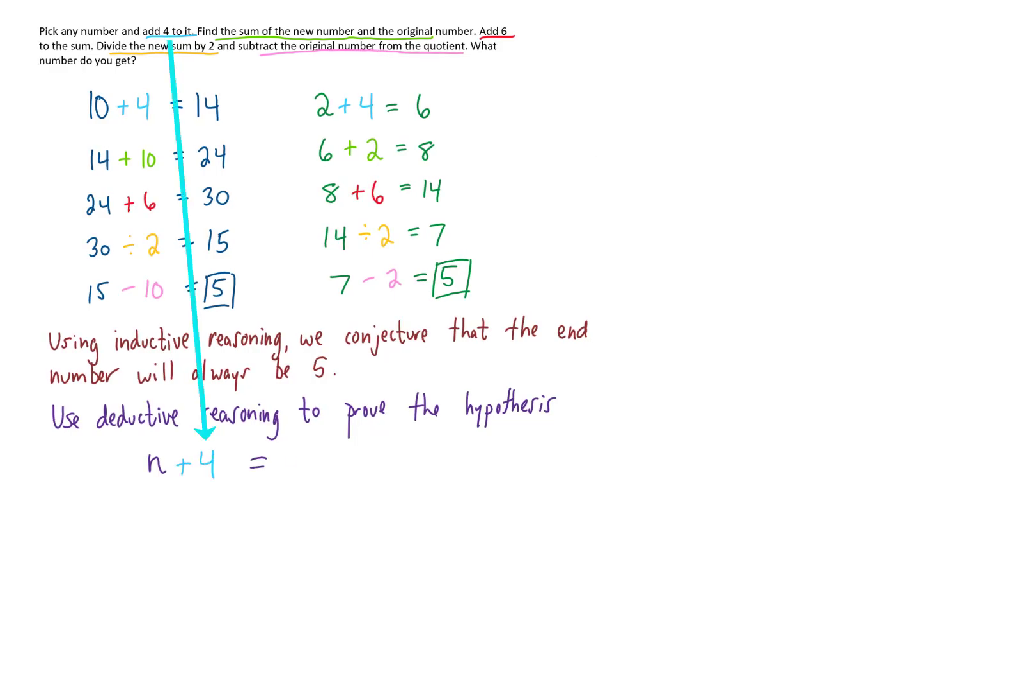If I add 4 to n, I just get n plus 4. Then if I take that n plus 4 and add to it my original number, which was n, you'll notice we have some like terms. And combining those like terms gives us 2n plus 4.